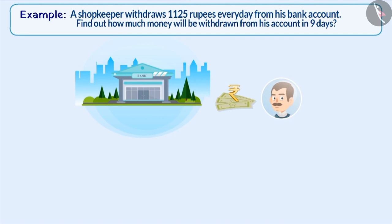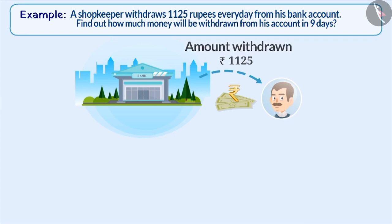A shopkeeper withdraws 1125 rupees every day from his bank account. Find out how much money will be withdrawn from his account in 9 days. In this example, we will represent the amount withdrawn from the bank by a negative sign. Since the shopkeeper withdraws 1125 rupees every day, the amount withdrawn from the account every day is expressed as minus 1125.